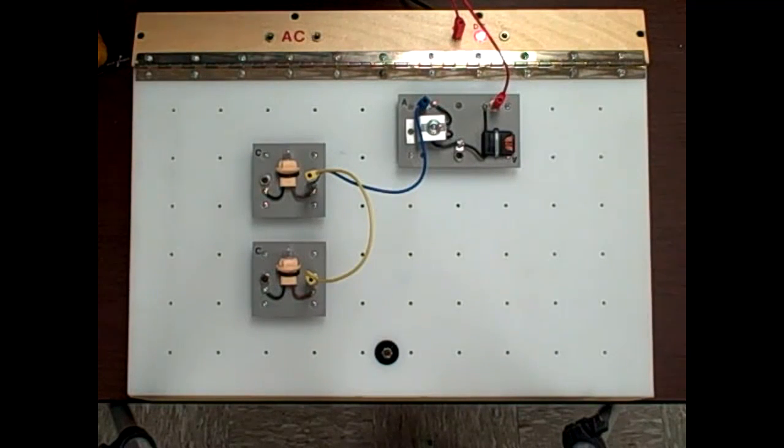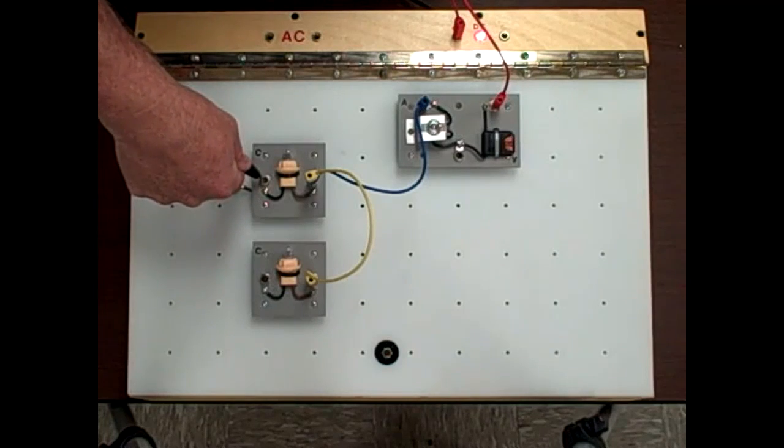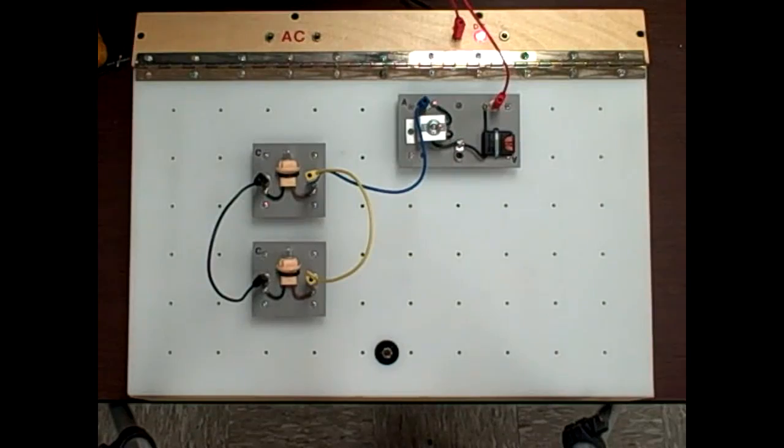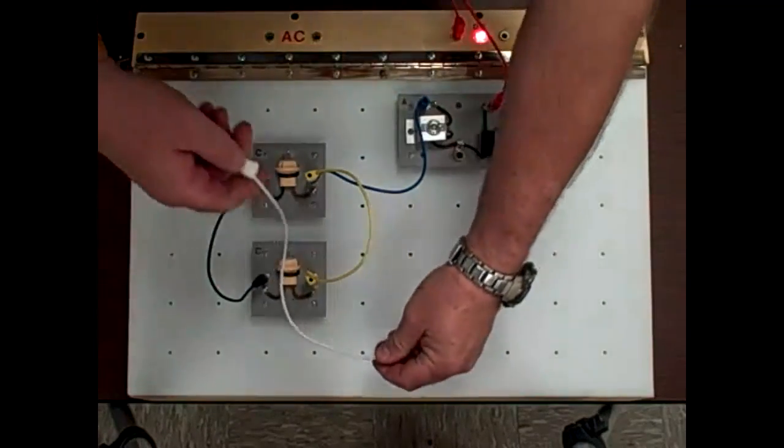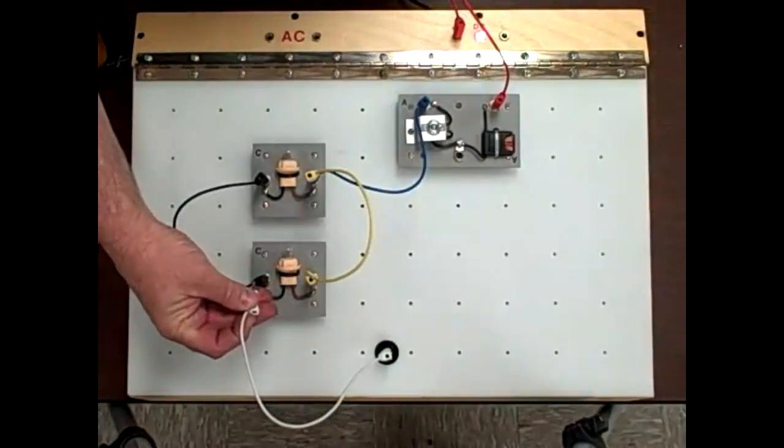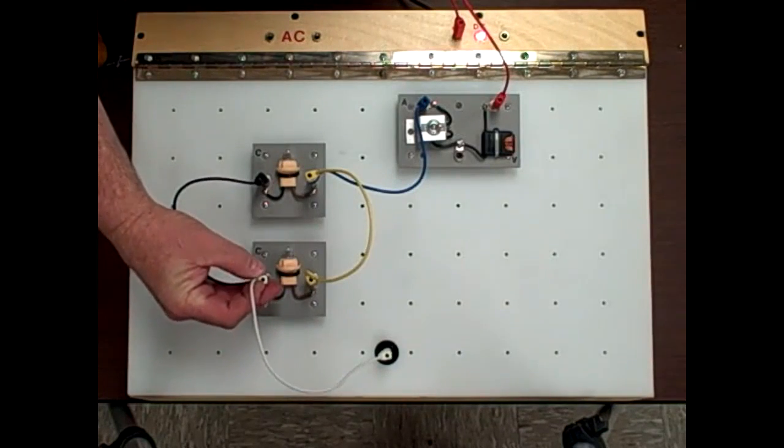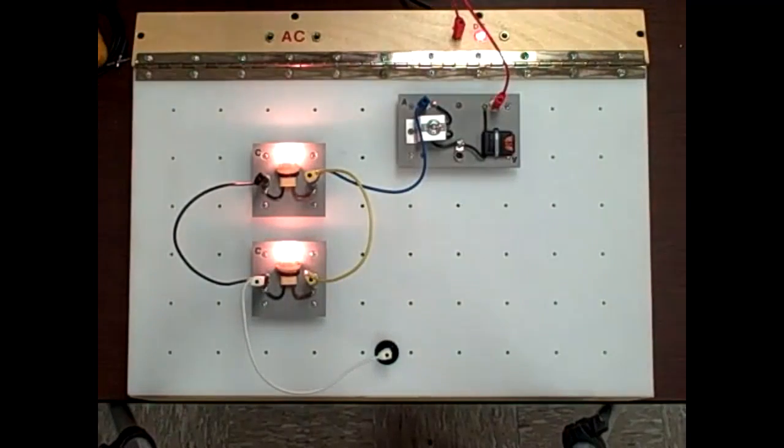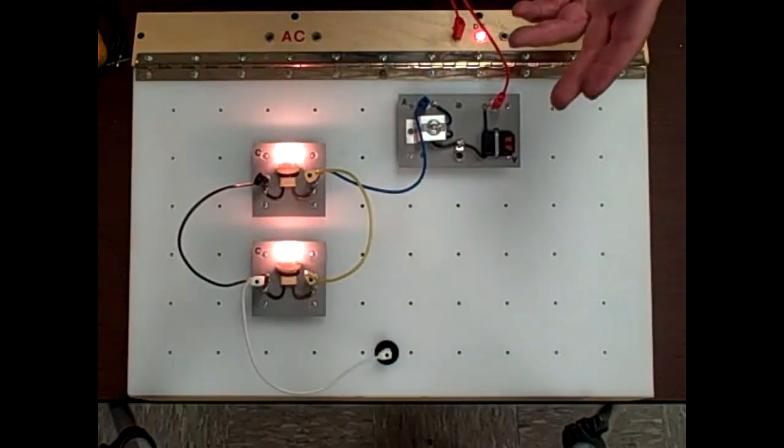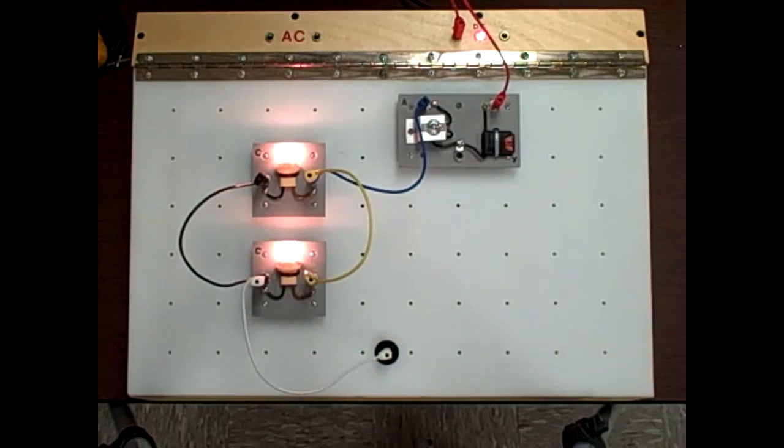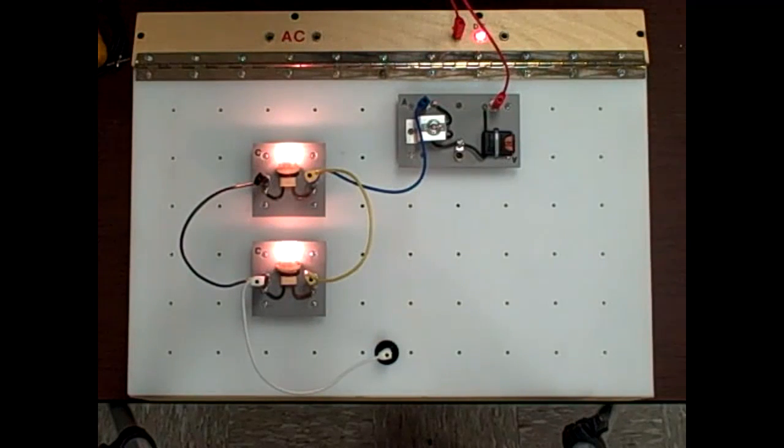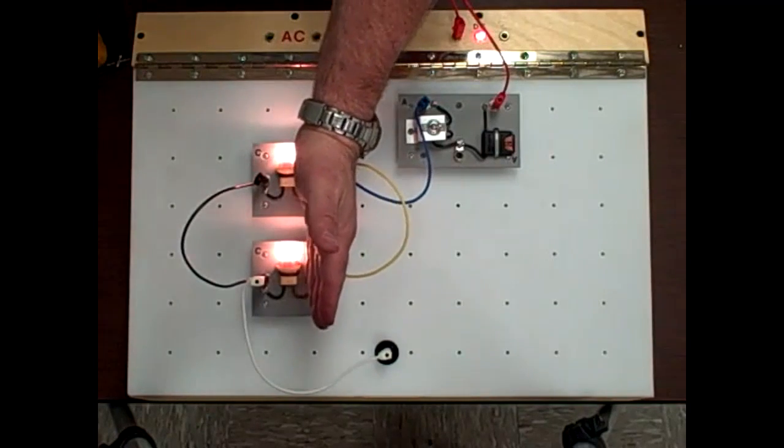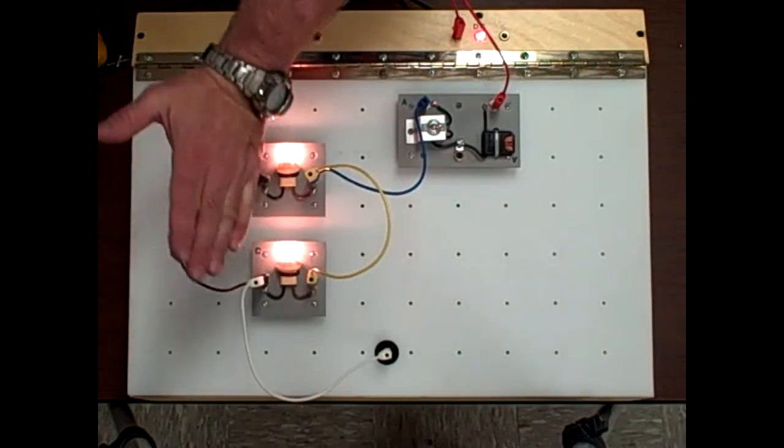Now you may notice if you've compared this to the video of the two bulbs in series, these are very bright. These are actually the correct brilliance because they're now exposed to 12 volts on this side and the ground on this side.